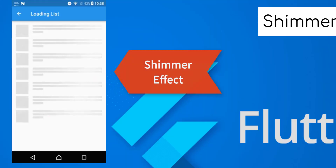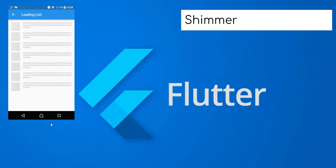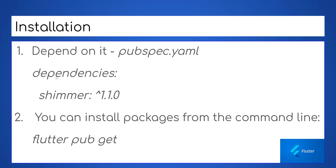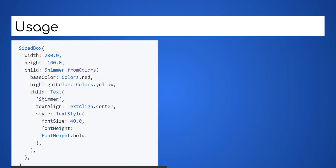Here is Shimmer Effect. I hope you have ever seen this if you ever use Facebook, especially the time you load data. To install this package in your Flutter application, you need to add it as a dependency in the project pubspec file. Here is how to use the package as shown here.